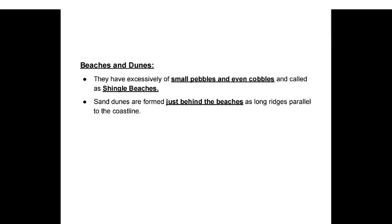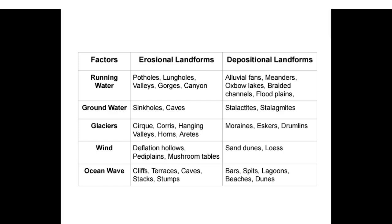Beaches and dunes: beaches with excessive small pebbles and cobbles are called shingle beaches; sand dunes form just behind beaches as long ridges parallel to the coastline. Summary of erosional and depositional landforms by agent: running water — erosional: potholes, valleys, gorges, canyons; depositional: alluvial fans, meanders, oxbow lakes, braided channels, floodplains. Groundwater — erosional: sinkholes and caves; depositional: stalactites and stalagmites. Glaciers — erosional: cirques, hanging valleys, horns, arêtes.